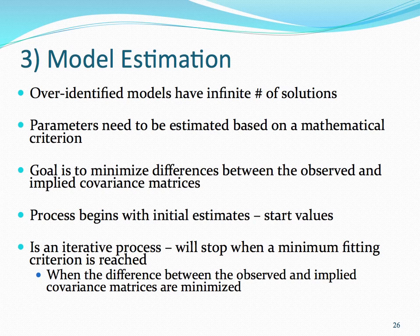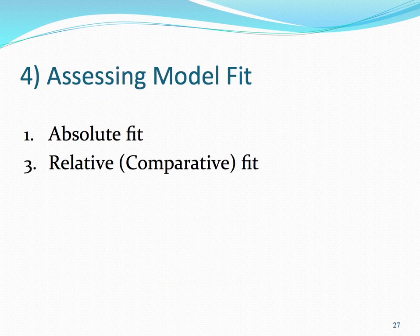After the model estimation process, we then proceed to the fourth step of assessing what we call our model fit. Over-identified models usually do not perfectly fit the data, so it is extremely important that we measure the degree of fit of such models. We have two main classes of model fit indices: absolute fit indices, and relative or comparative fit indices. There are several ones used in the SEM literature; in this lecture, we will briefly discuss the main types commonly reported in structural equation modeling papers.